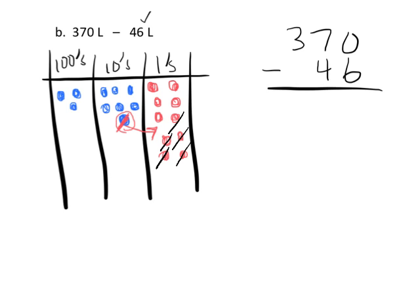1, 2, 3, 4, 5, 6—so I've subtracted the 6. Now it says we need to subtract 40, so we go to our tens column and subtract 4 tens: 1, 2, 3, 4. The answer is 3 hundreds, 2 tens, and 4 ones, so the answer is 324. That's using the number disks, and we want students to understand what's going on before we teach them to use the algorithm mindlessly.